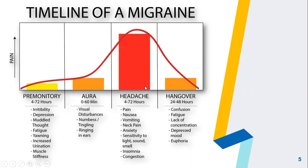The third stage is the headache. The pain intensity is highest during this phase of the migraine. A migraine can cause severe throbbing pain or pulsing sensation, usually on one side of the head. It can last for hours to days. The headache may be associated with pain, nausea, vomiting, neck pain, anxiety, sensitivity to light, sound, smell, insomnia, and congestion.